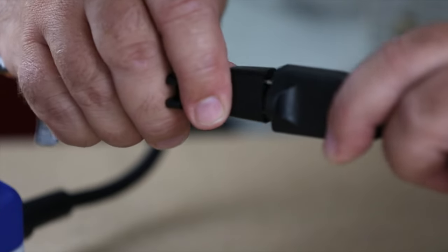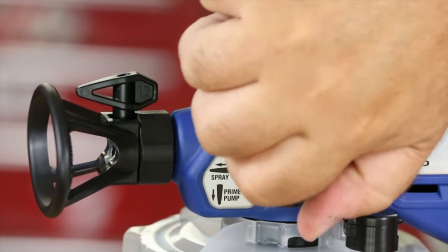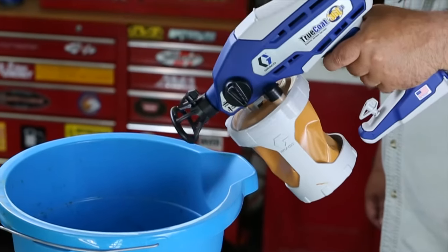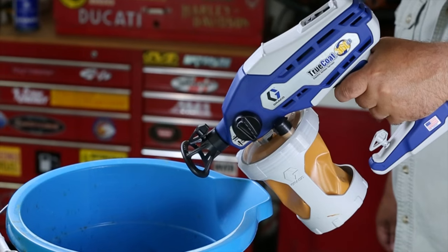Plug the sprayer into a power source. Turn the prime pump spray knob down to the prime pump position. Point the sprayer into a bucket and pull the trigger for five seconds.